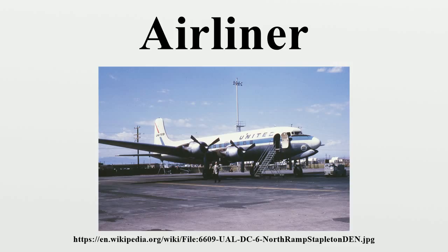Regional airliners typically seat fewer than 100 passengers and may be powered by turbofans or turboprops. These airliners are the non-mainline counterparts to the larger aircraft operated by the major carriers, legacy carriers, and flag carriers, and are used to feed traffic into the large airline hubs. These regional routes then form the spokes of a hub-and-spoke air transport model.